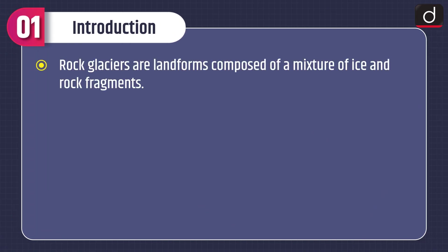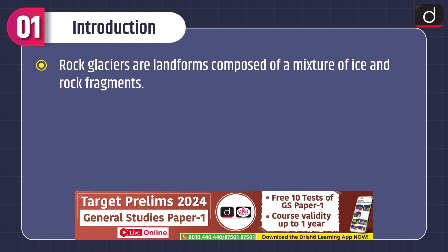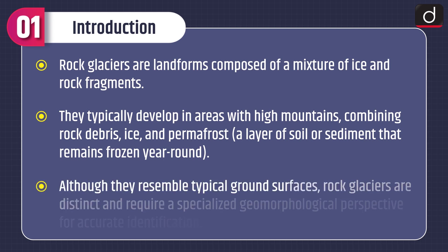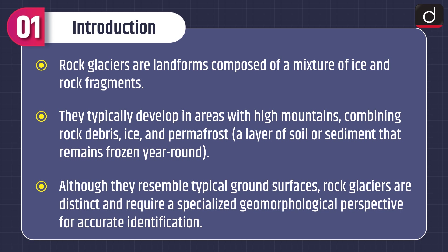Moving on to the introduction of rock glaciers. Rock glaciers are landforms composed of a mixture of ice and rock fragments. They typically develop in areas with high mountains, combining rock debris, ice, and permafrost — that is, a layer of soil or sediment that remains frozen year-round. Although they resemble typical ground surfaces, rock glaciers are distinct and require a specialized geomorphological perspective for accurate identification.